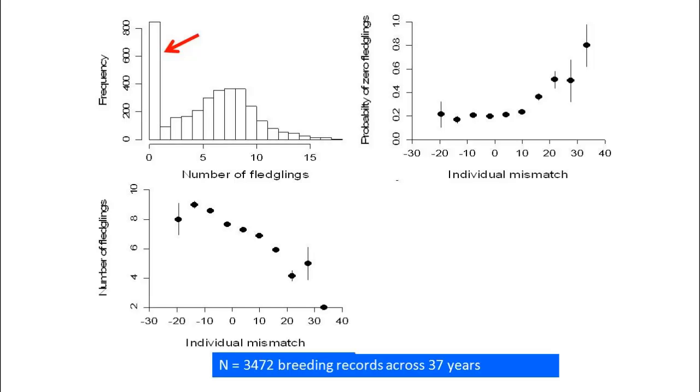Among those females that did manage to fledge some chicks, those breeding late relative to the food peak fledged fewer chicks than those breeding at the same time as or slightly earlier than the food peak.